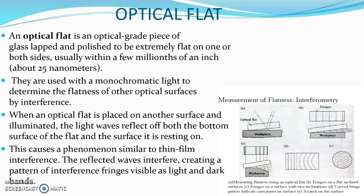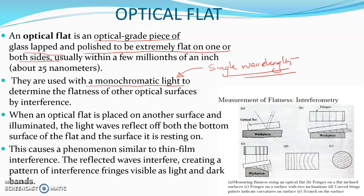The optical flat is an optical grade piece of glass, lapped and polished to extremely flat on one or both sides. We use optical flats along with a monochromatic light — a light with a single wavelength. One example of monochromatic light is laser. When used along with monochromatic light, we can use the optical flat to determine the flatness of other optical surfaces by interference. The surface to be measured should be finished enough to reflect the light rays.